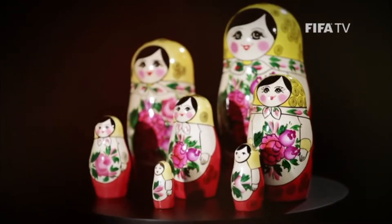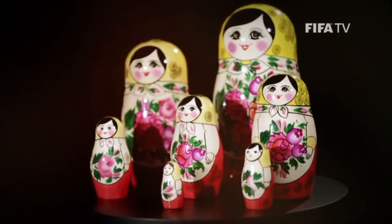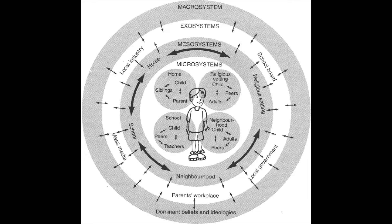The smallest doll in which the individual is housed is called the microsystem, which is all of the direct influences upon the individual such as parents, family, school friends, etc.